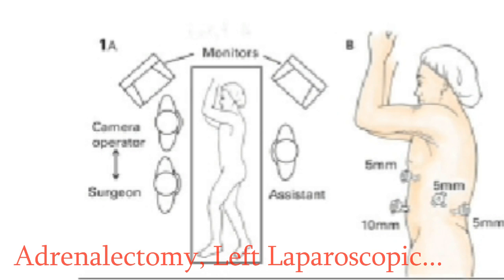A 10 mm 30-degree laparoscope is placed either above the umbilicus or in the left lateral mid-subcostal position in the midclavicular line, just above the level of the umbilicus, using the open technique of Hassan. The abdominal space is inflated to 15 centimeters of pressure. The laparoscope is introduced and all four quadrants of the abdomen are examined for abnormalities, safety of other planned port sites, and evidence of any metastatic disease.